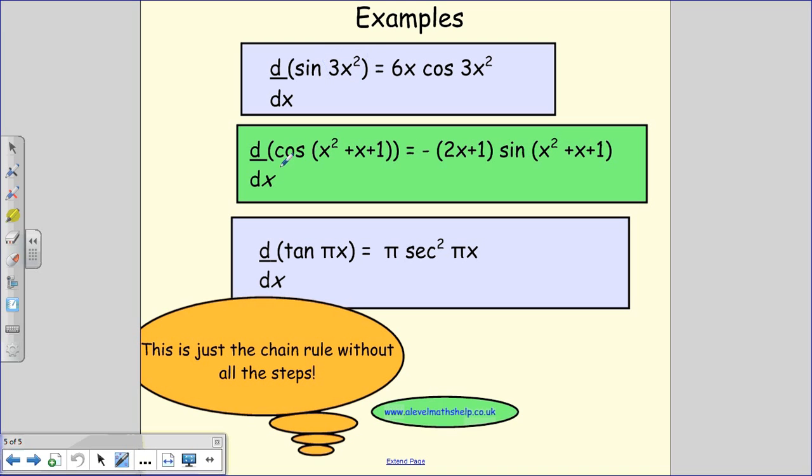So with this one, I'm going to differentiate cos. If I differentiate cos, I get minus sine and then I put the same function in that I started with and then in front of it, I differentiate whatever the function was. So the function is x squared plus x plus 1, so that will become 2x plus 1. And that's your answer.